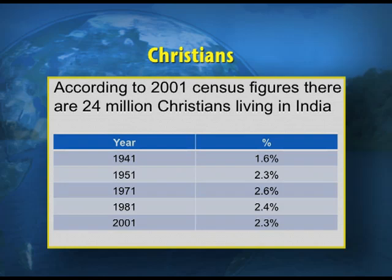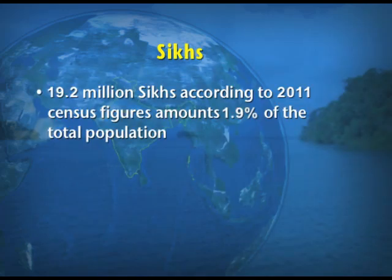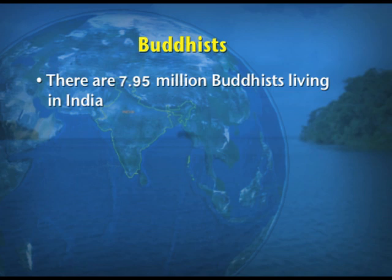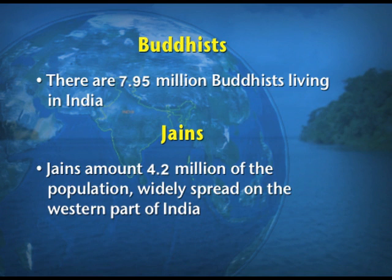The Christian population had been increasing from 1951 to 1971, but there was a decline from 2.4% in 1981 to 2.3% in 2001. Sikhs number 19.2 million according to the 2011 census, amounting to 1.9% of the total population; Punjab has the highest percentage of Sikhs at around 60%. Buddhists number 7.95 million and Jains 4.2 million of the population in the country.